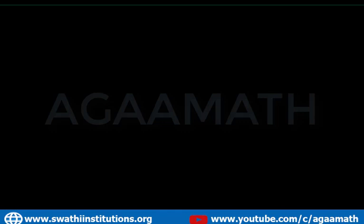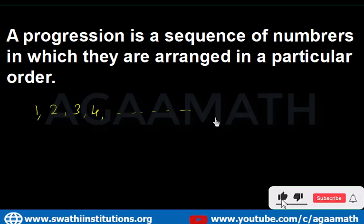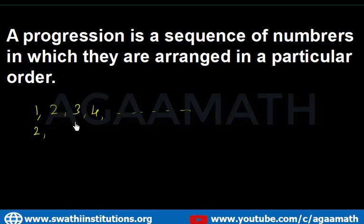A progression is a sequence of numbers arranged in a particular order. For example, the natural numbers — 1, 2, 3, 4 — are a progression. Even numbers like 2, 4, 6, 8, 10 are also a progression, as they are arranged in a particular order.